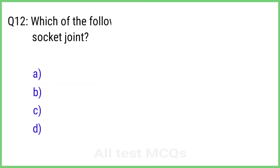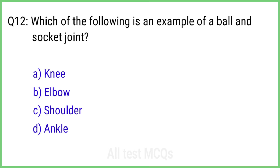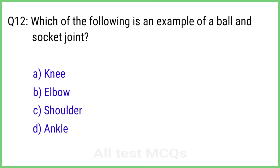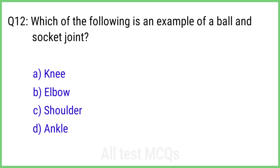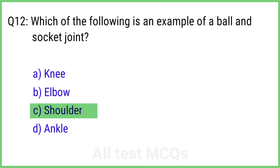Question 12. Which of the following is an example of a ball and socket joint? The right answer is option C: Shoulder.